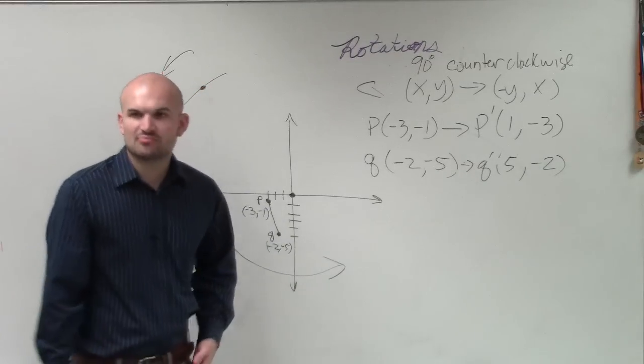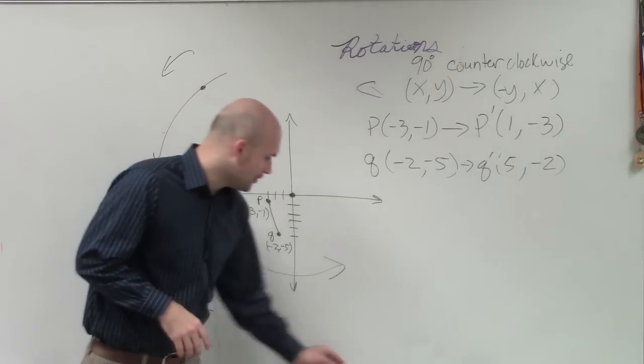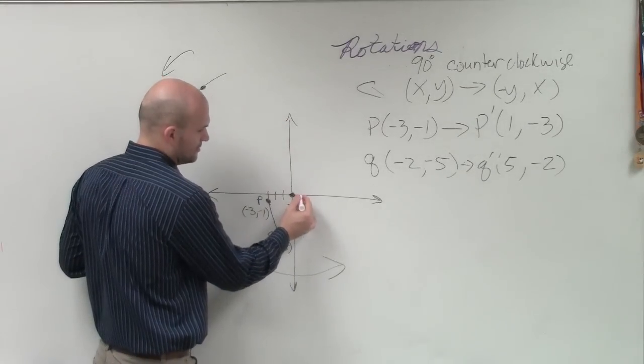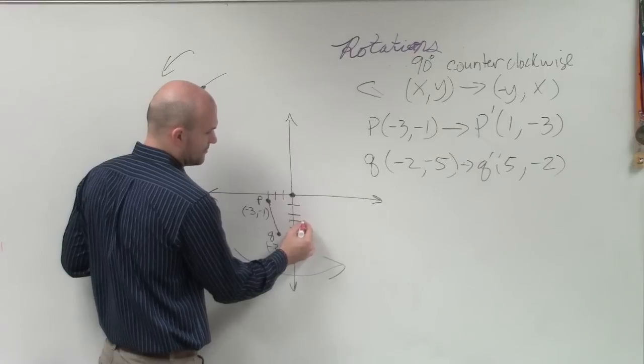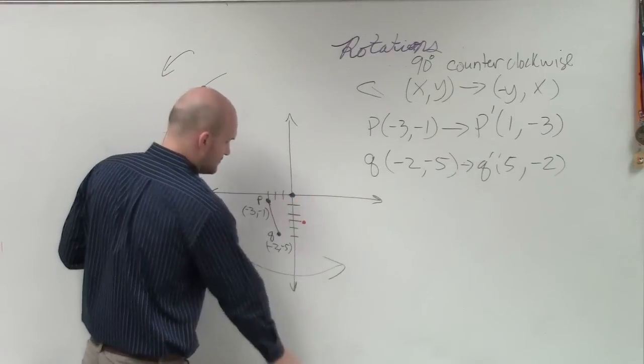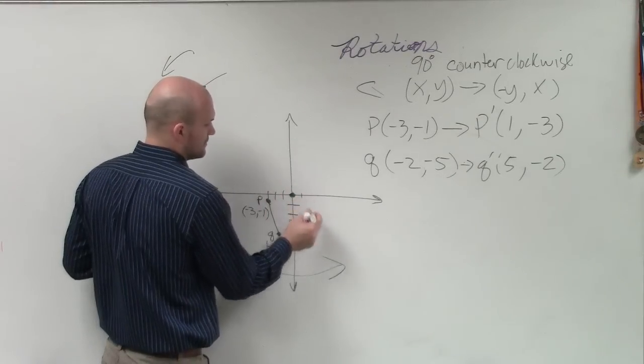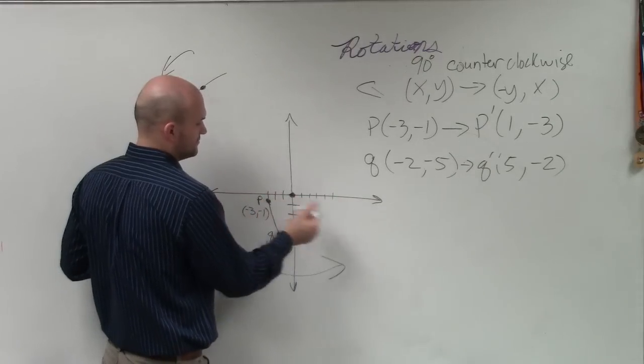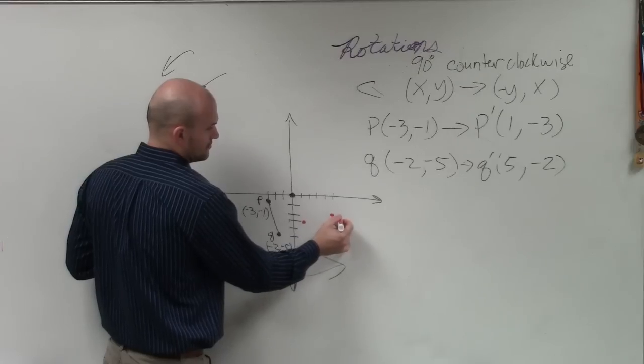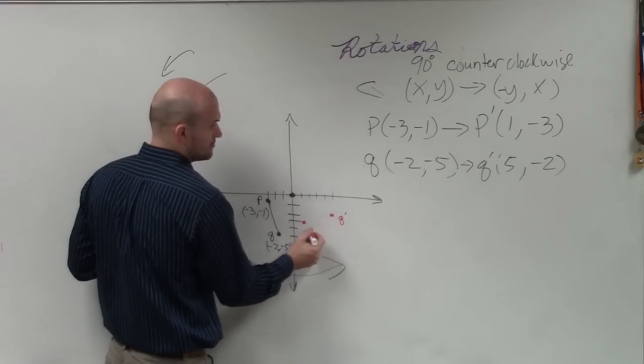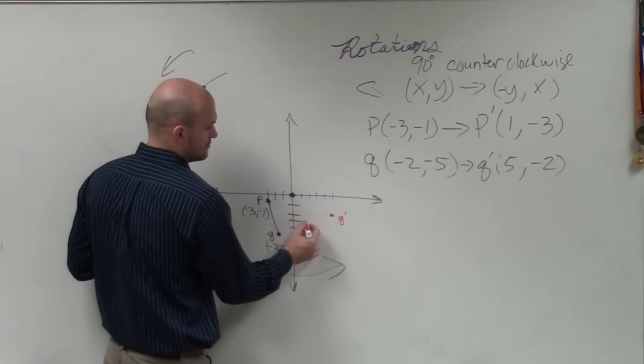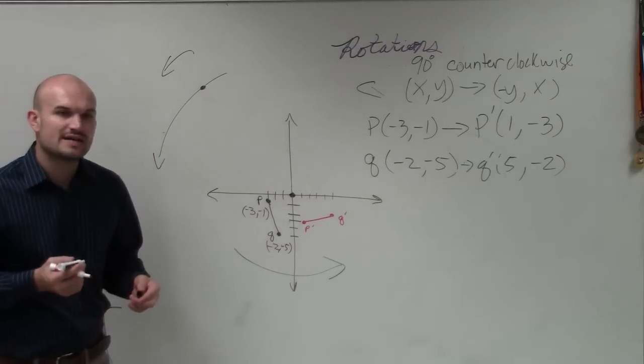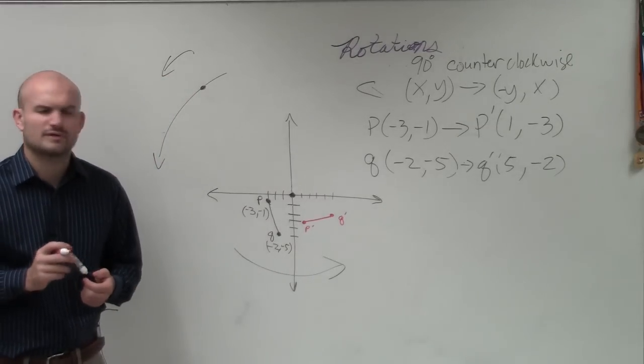So now let's go and plot these new points. So our new points is going to be 1 comma 3, 1 comma 3, and then 5, 1, 2, 3, 4, 5, negative 2. So that's what the rotation of 90 degrees looks like. Would everybody agree with that?